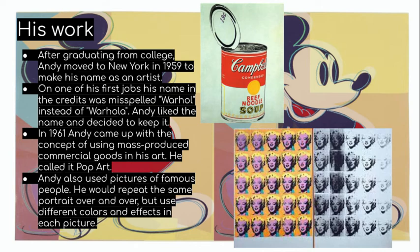In 1961, Andy came up with the concept of using mass-produced commercial goods in his art, and he decided to call it pop art. Andy also used pictures of famous people — he would repeat the same portrait over and over, but used different colors and effects in each picture.